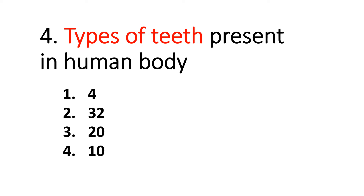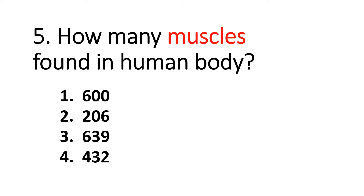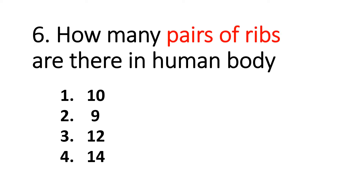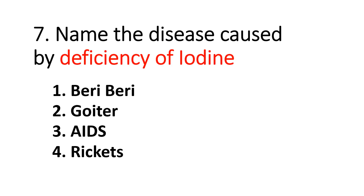Question number four: Types of teeth present in human body — answer: four. Question number five: How many muscles are found in the human body? Answer: 639. Question number six: How many pairs of ribs are there in human body? Answer: 12 pairs.